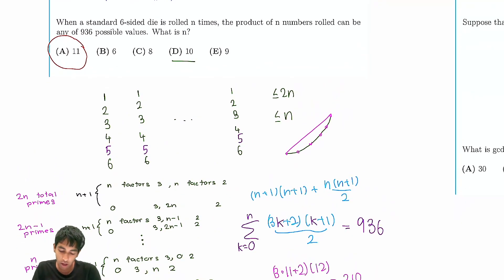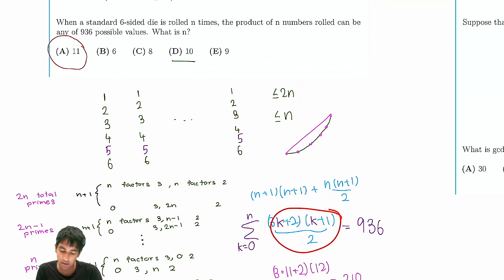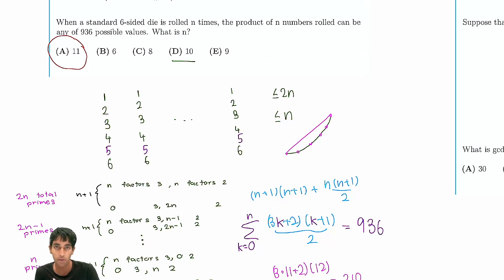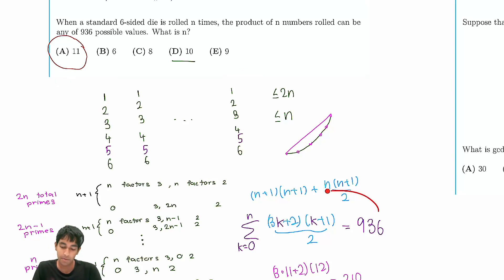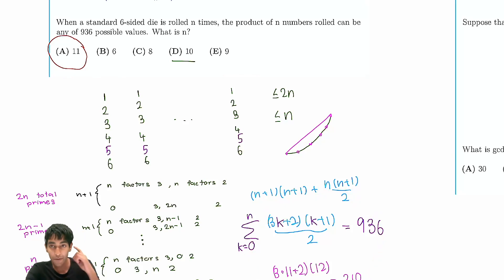If you wanted to solve it rigorously, you could expand the sum, apply sum-of-squares formulas, and solve the resulting cubic — or just guess and check nearby values. But this approximation approach is a little bit cooler, especially given that you have the answer choices. I hope you found this video useful — thank you for watching.